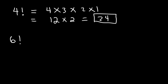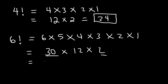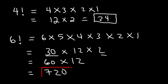Let's say if we want to evaluate 6 factorial. It's 6 times 5 times 4 times 3 times 2 times 1. Now 6 times 5 is 30. 4 times 3 is 12 and 2 times 1 is 2. Now we can multiply 30 and 2, so that's 60, and then 60 times 12. Well 6 times 12 is 72, therefore 60 times 12 is 720. So 6 factorial is 720.